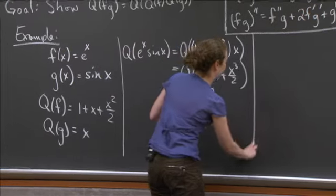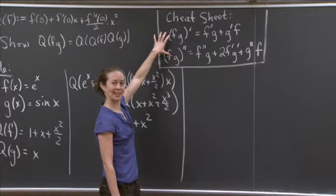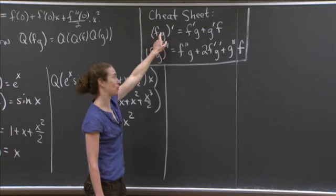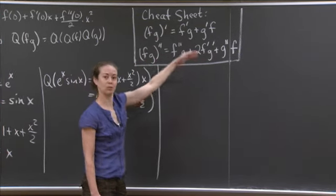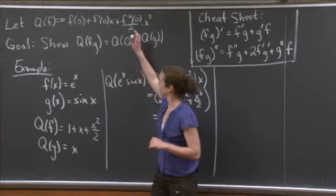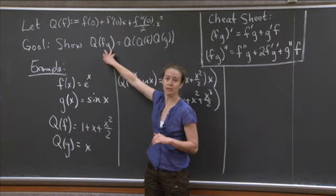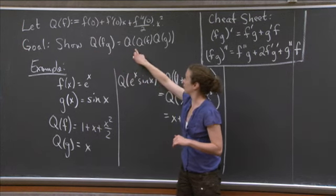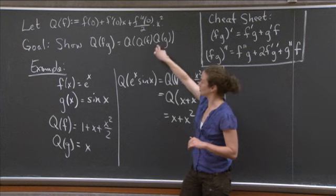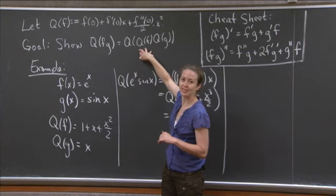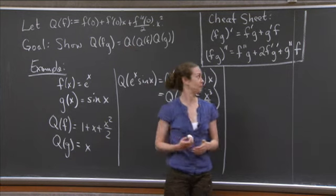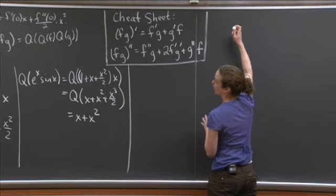We have a cheat sheet up here that I'm going to refer back to. We have the product rule: (fg)' is equal to what's on the right, and (fg)'' is equal to what's on the right. My goal is to show that the quadratic approximation of fg equals the quadratic approximation of Q(f) times Q(g). So let's do the right-hand side first, because that's a little nicer. Then we'll compute the left-hand side and show they're equal.